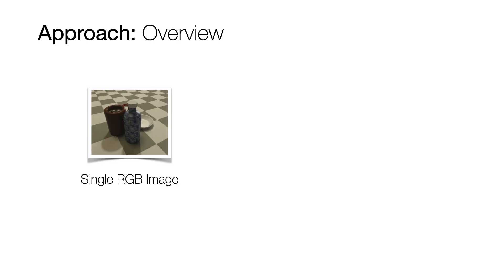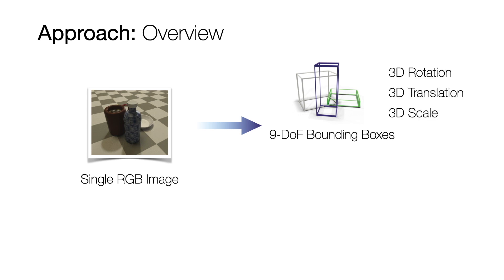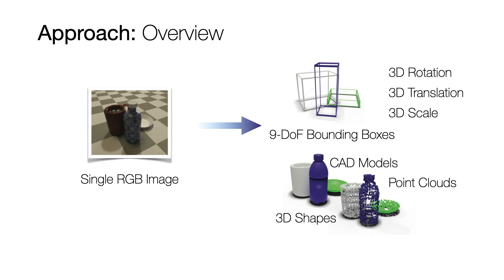Overall, the presented approach operates as follows. From a single RGB image as input, our method jointly predicts multiple 9 degrees of freedom bounding boxes consisting of rotation, translation and scale, as well as the shape exemplars that are agnostic to the actual shape representation such that we can switch seamlessly between various representations including CAD models, point clouds and voxel grids.